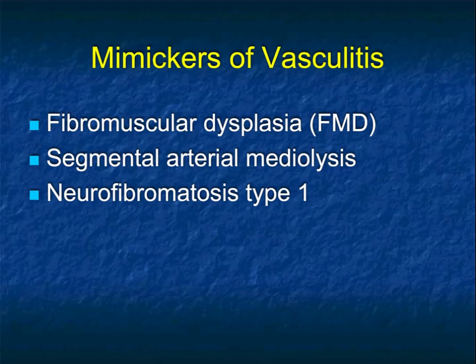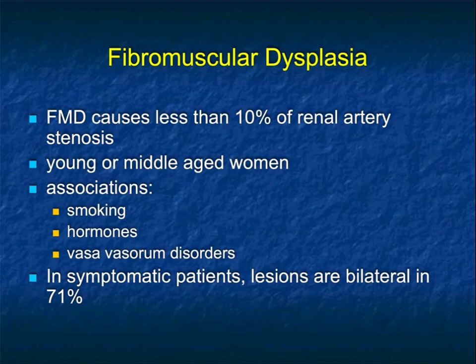Now, there are mimickers of vasculitis — things that involve vessels but are in a different category. Three of them to comment on: fibromuscular dysplasia (FMD), which we see a lot in practice; segmental arterial medial lysis, which is less frequent; and neurofibromatosis, which is also fairly infrequent. FMD causes less than 10% of renal artery stenosis, but we often evaluate patients with hypertension. Associations with FMD include being a young or middle-aged woman, smoking, hormonal use, and vasovasorum disorders.